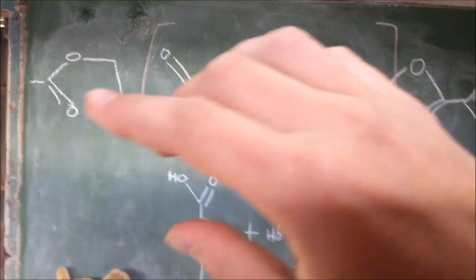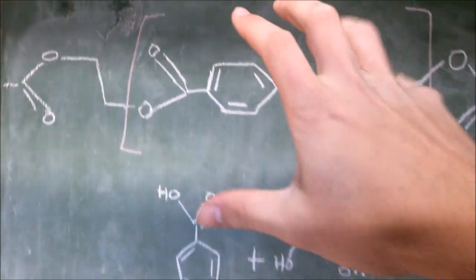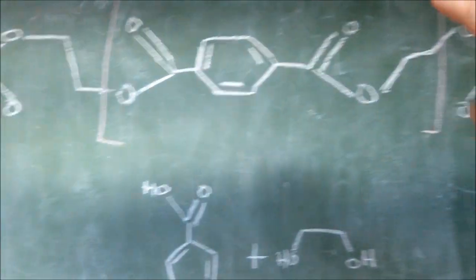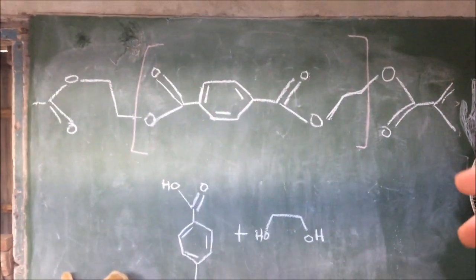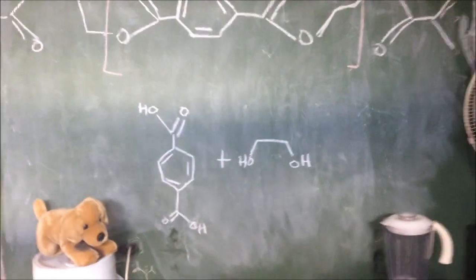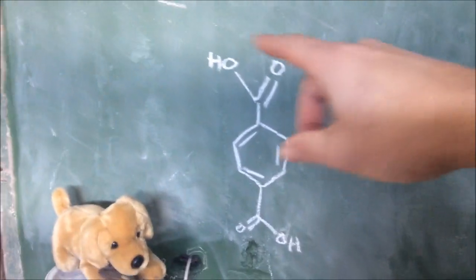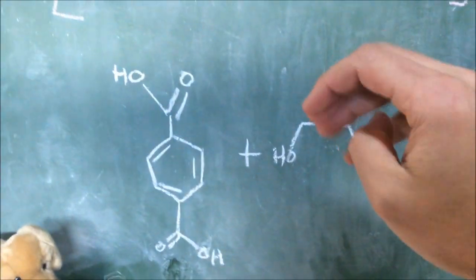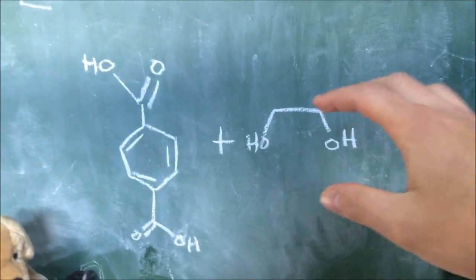So up here we have our PET which has the terephthalic acid as well as ethylene glycol. That's the monomer there and it just links up into very long chains. It's obviously a polymer. PET stands for polyethylene terephthalic acid because we've got ethylene glycol and terephthalic acid.